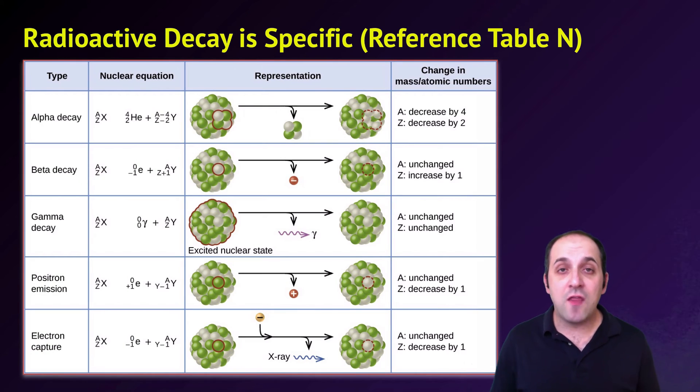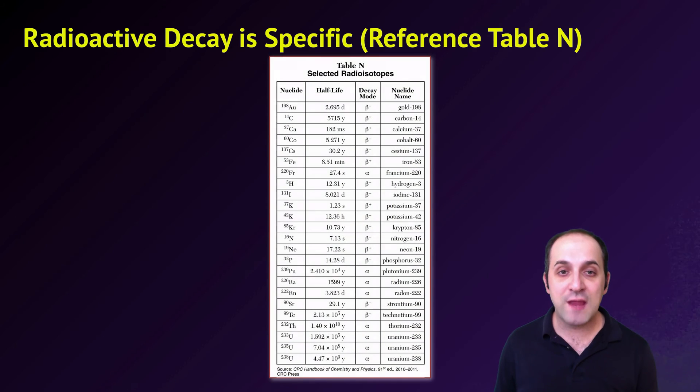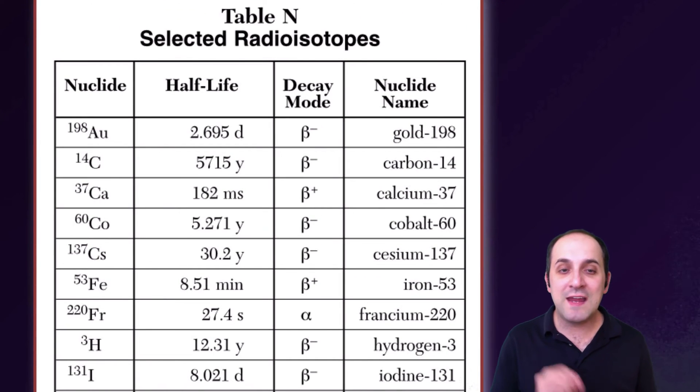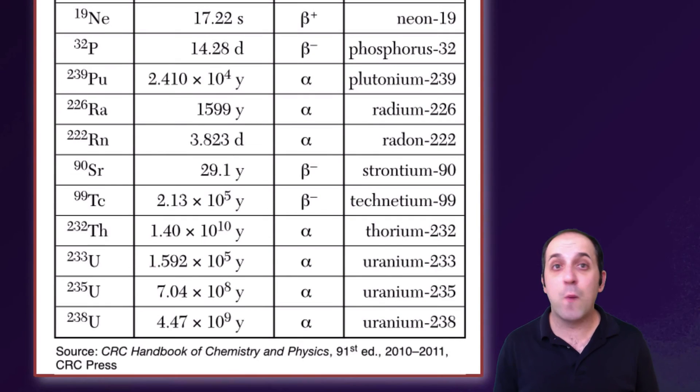It's important to understand that the way that a particular radioisotope decays is specific to that particular isotope. And so this is shown on reference table N. So here are the five major types of nuclear decay modes that you need to be familiar with. And if we look at reference table N, and I'll make this bigger so you can see what's going on. You can see that each of the isotopes on reference table N has a specific decay mode. So for instance, gold 198 produces beta particles. Uranium 238 produces alpha particles.